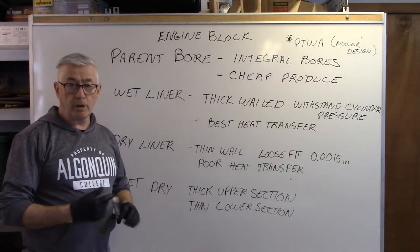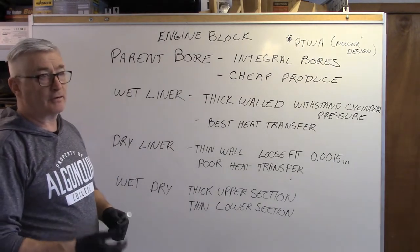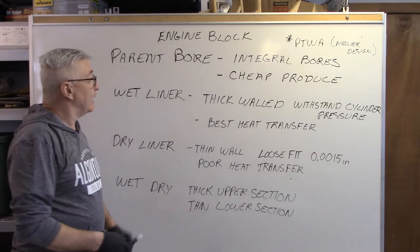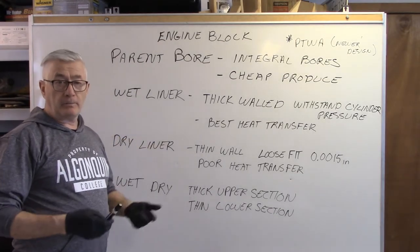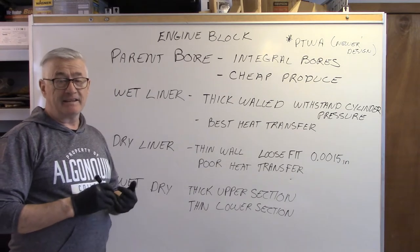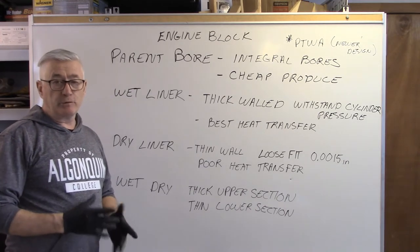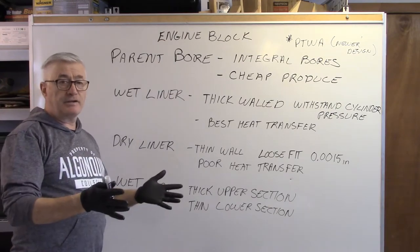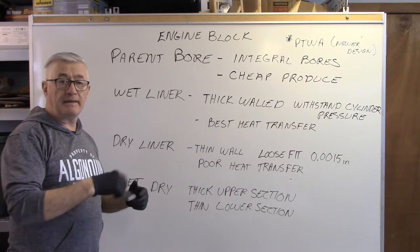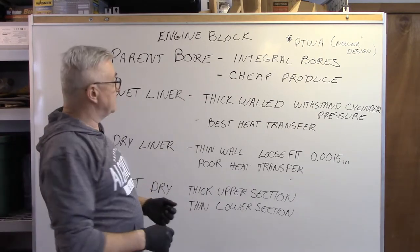Okay, so to carry on with blocks, we're going to look at another way of describing them as the liner style. First one we're going to look at is called a parent bore block. Parent bore block means that there is no liner. The cylinder is integral with the block. It is simply cast into shape, a rough shape, and then it is machined out to the diameter desired for each piston.